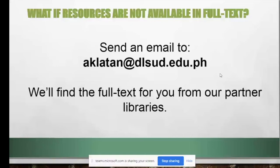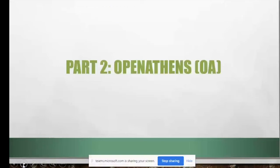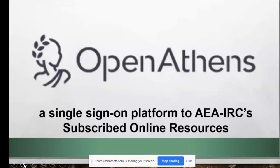That concludes Part 1 — our online resources. If resources are unavailable, you can still email us. Now, how do we access all those resources? We need an OpenAthens account. OpenAthens is a single sign-on platform to all AAIRC-subscribed online resources — one username and password for everything.